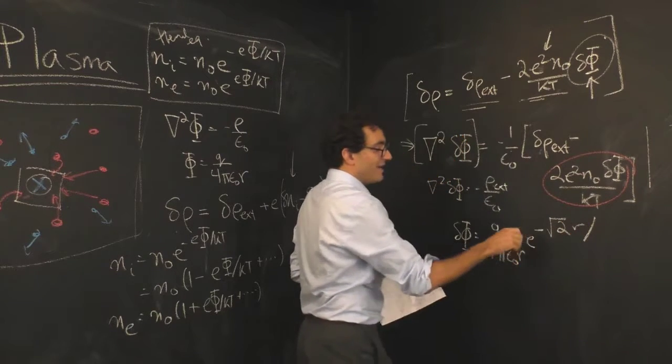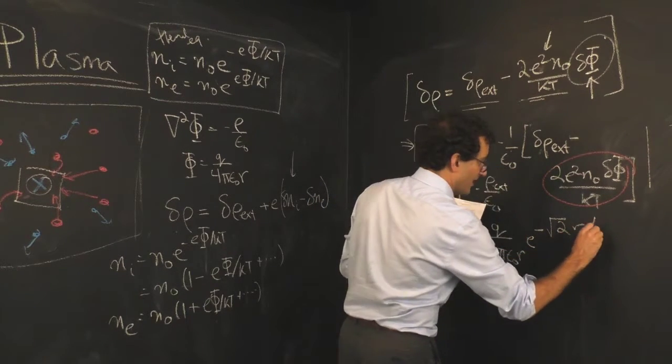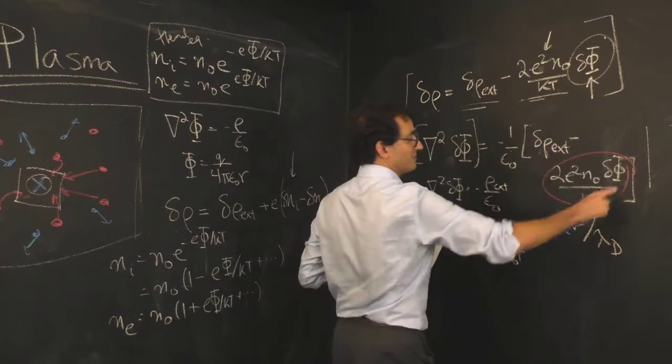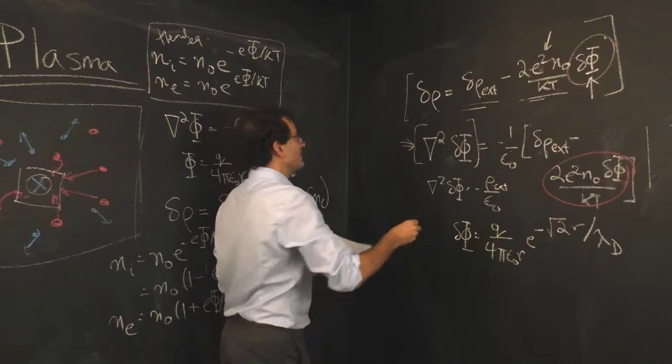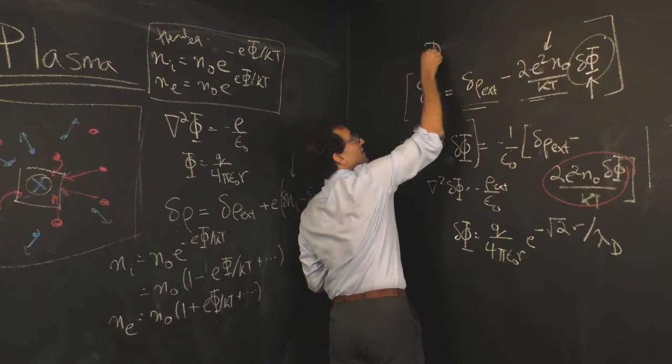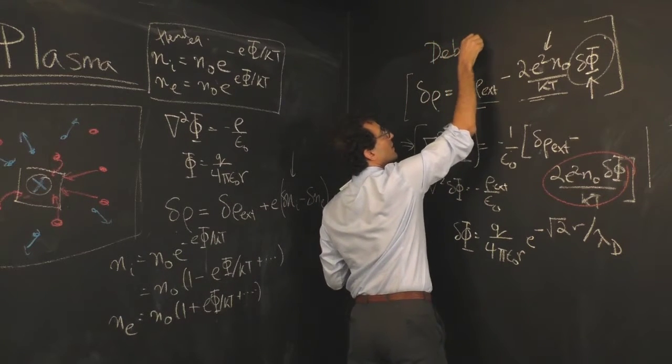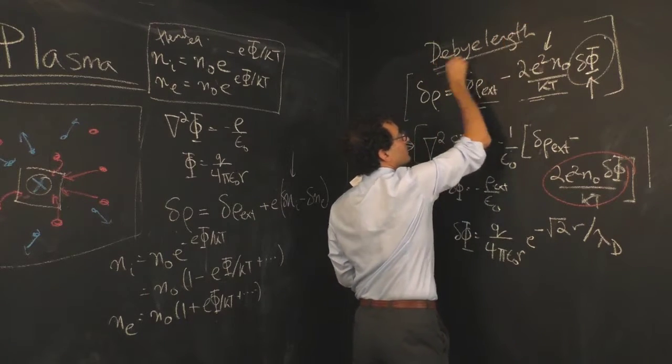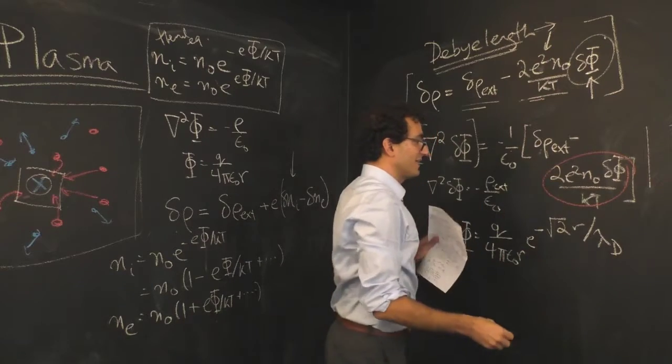You have e to the power of negative root 2 r divided by a constant lambda d, and lambda d just depends upon all these terms here. Lambda d is known as the Debye length.